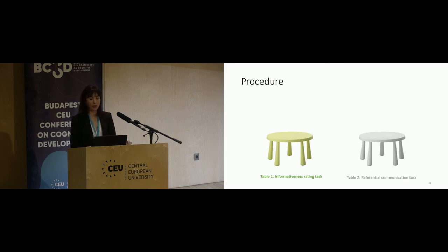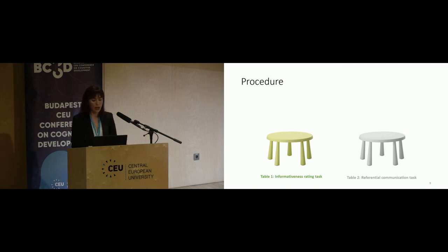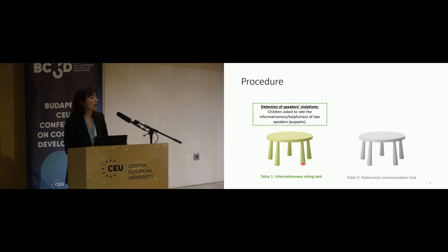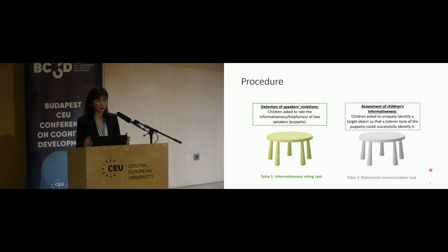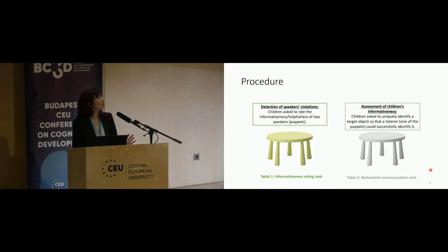Our participants were four-and-five-year-old children recruited and tested both at a lab setting and at the Ontario Science Center in Toronto. We chose preschool-aged children because there is a lot of development happening in both the communicative and social domains within these ages. For our procedure, children performed two tasks at two different tables. First, children performed an informativeness rating task to assess whether they can detect the speaker's conversational violations. Then they moved to a different table to play a referential communication game that allowed us to assess how informative children were as speakers — being asked to uniquely identify a target object for a listener.